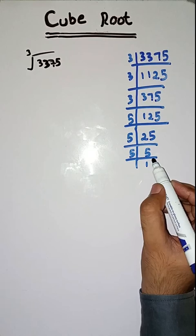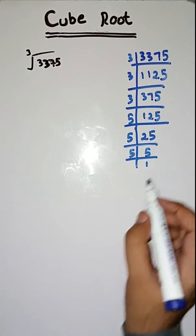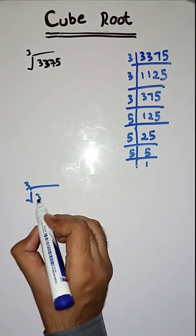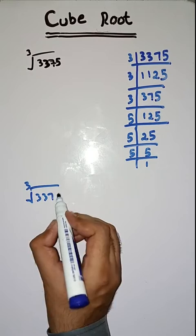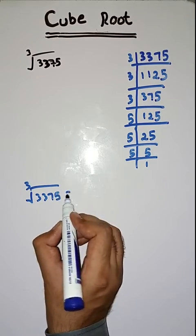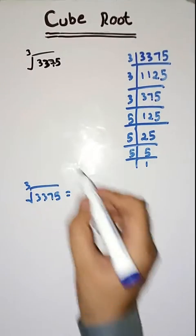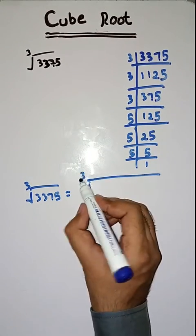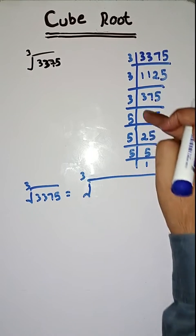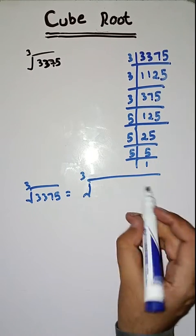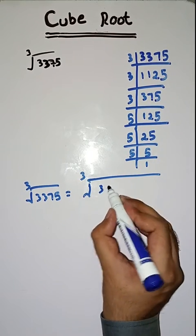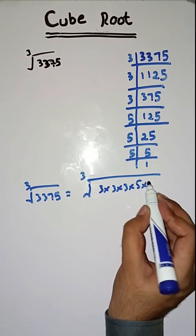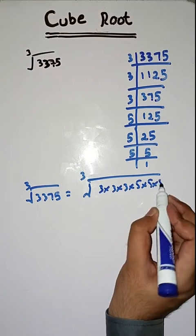Got it students? Now, the cube root of 3375 is equal to the cube root of its prime factors, which are 3 × 3 × 3 × 5 × 5 × 5.